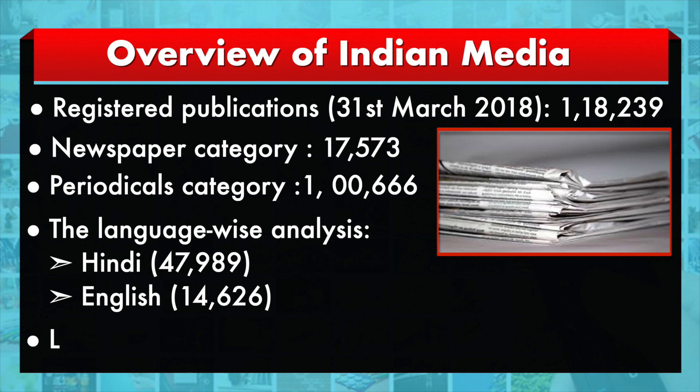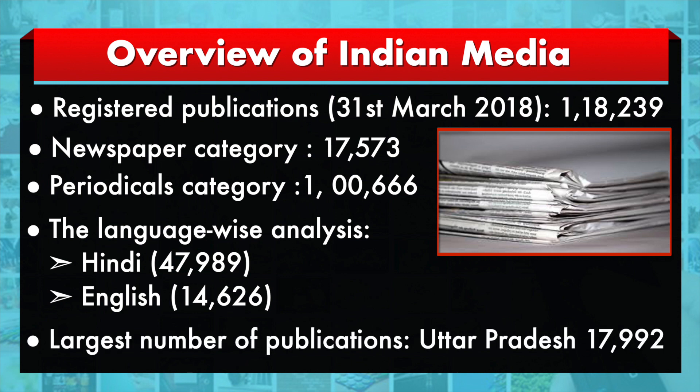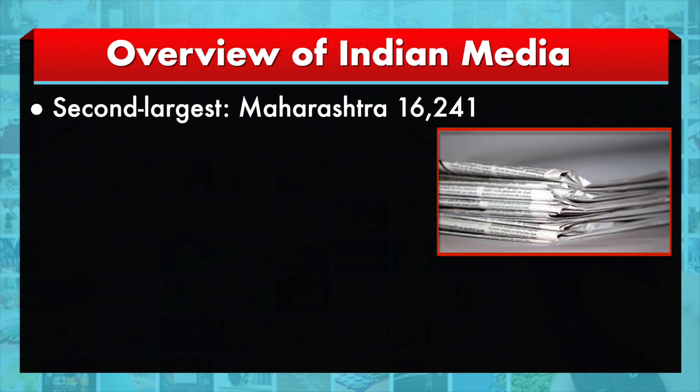Looking at the largest number of publications from a particular state, Uttar Pradesh occupies the first position, being one of the largest states in the country by population. The second position goes to Maharashtra with 16,241 publications.